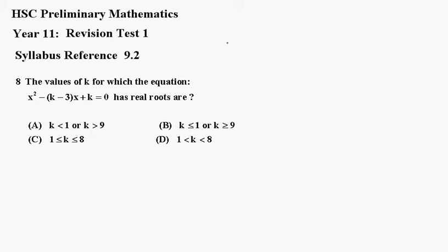Number 8. The values of k for which the equation x squared minus k minus 3x plus k equals 0 has real roots are: a, b, c or d.